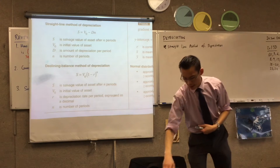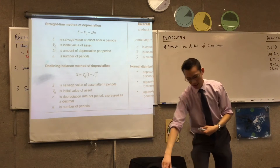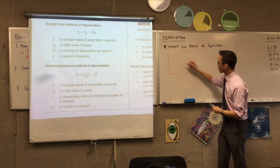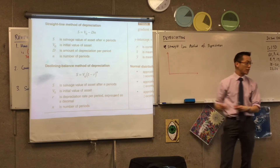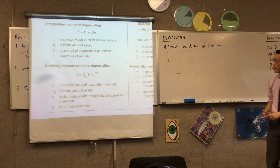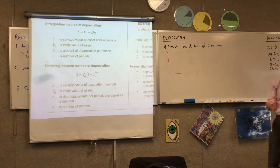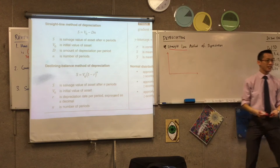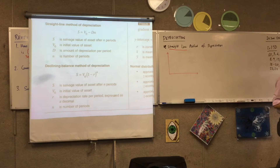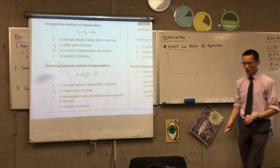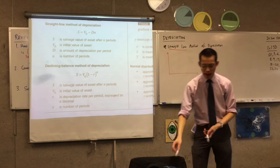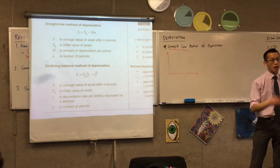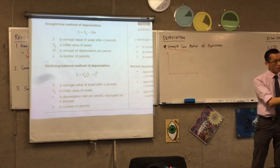I want you to draw a little set of axes — this has to be small. Think back to when we were looking at linear relationships. This is a linear relationship. You can even see it in the name telling you it's going to be linear — it says straight line. What would a graph of this depreciation look like, of the value over time?